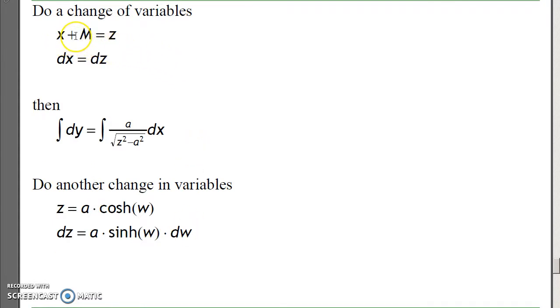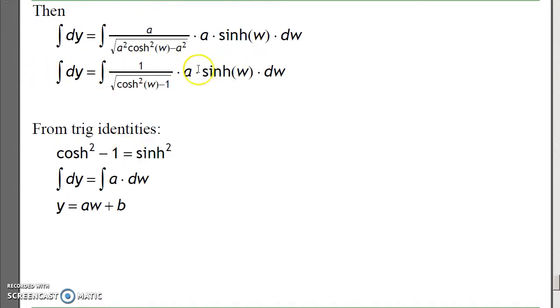Doing a change in variable, to clear out the x plus m squared, let's say x plus m is z, I then get this equation. Do another change in variable, z is a cosh w, meaning dz is a sinh w dw. I'll throw it in, and I suddenly have something I can integrate. cosh squared minus 1 is sinh, these cancel, and I just have a. So integral of y is just the integral of a dw, which is a w plus b.